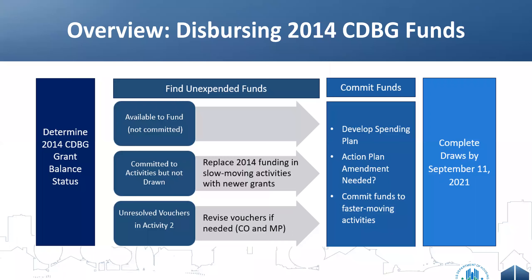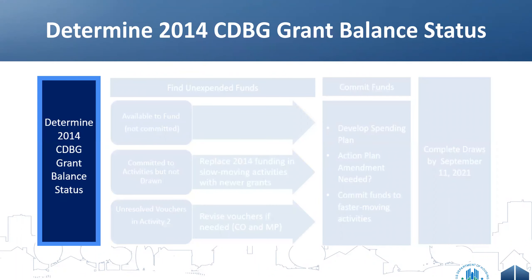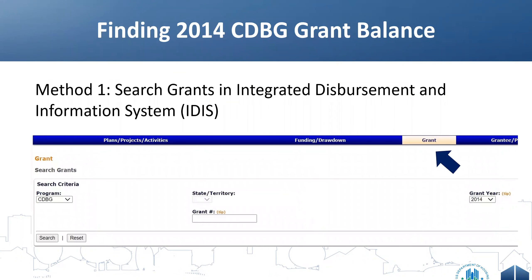To determine the 2014 CDBG grant balance, go to your grant tab in IDIS and search for the grant. On that screen you can see grant year 2014. You can also run the PR01 report, which we'll show later. Going live in the system shows you exactly what's happening right now, whereas reports are always delayed by one day.